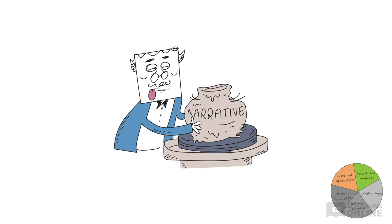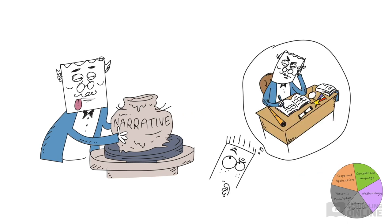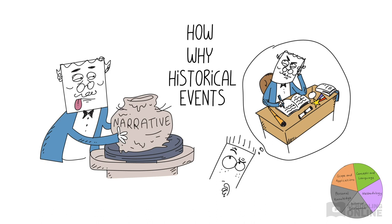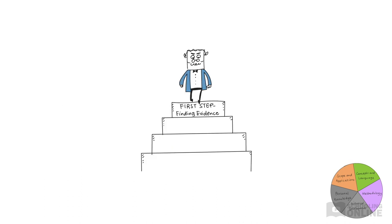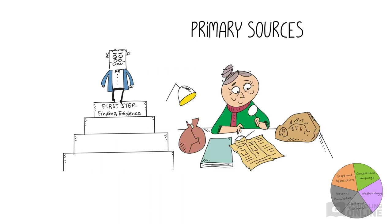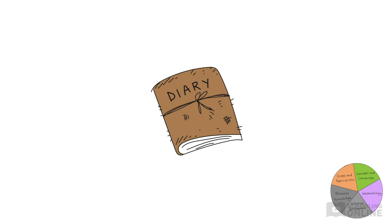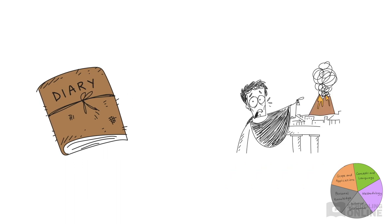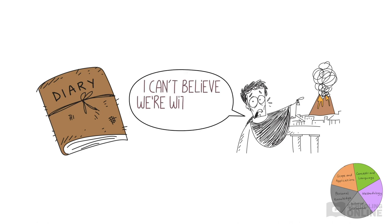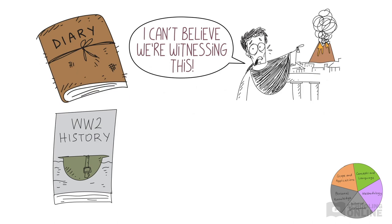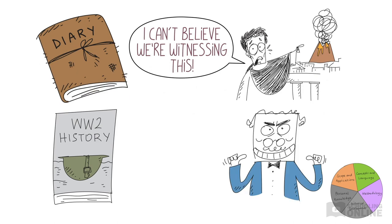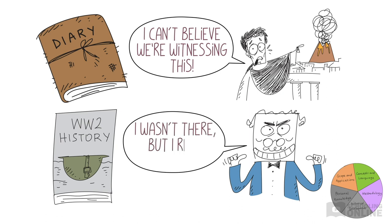So how do historians develop these narratives? Let's move on to methodology. Historians aim to develop theories that explain how and why historical events occurred. In most cases, the first step is looking through the available evidence — this includes primary and secondary sources. Primary sources are first-hand accounts, created either at the time of the historical event or later by someone who experienced it. Secondary sources are second-hand accounts, typically created by individuals who have studied primary sources, like historians.